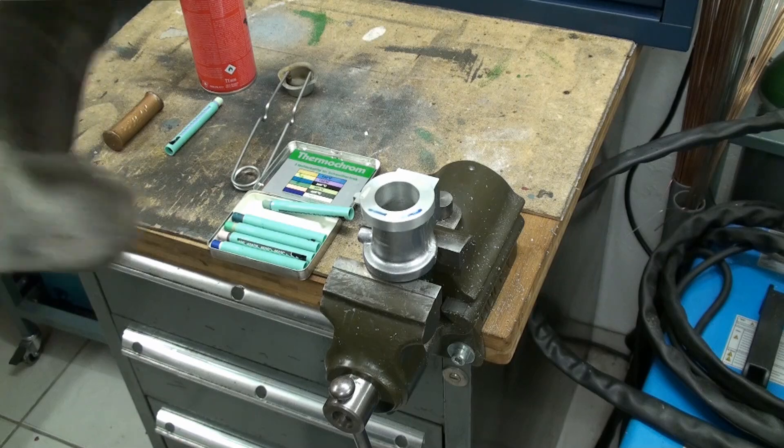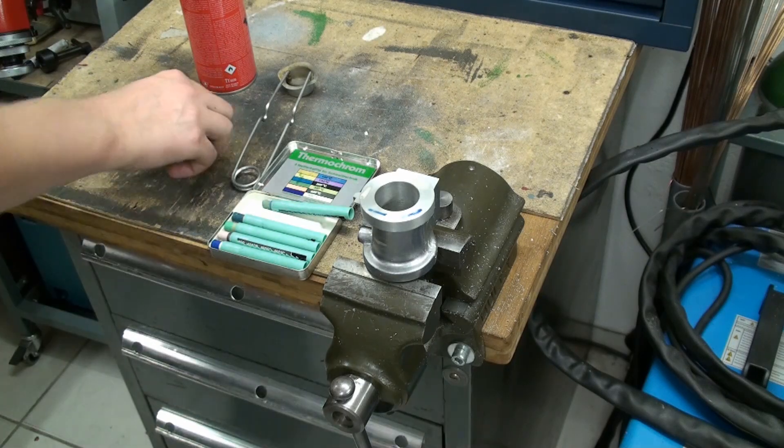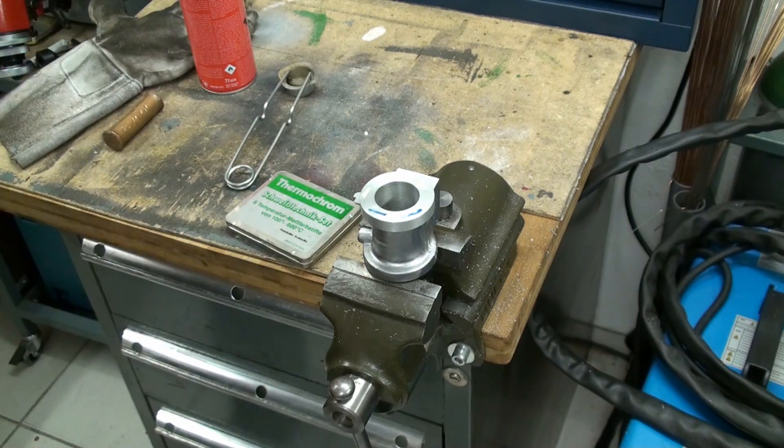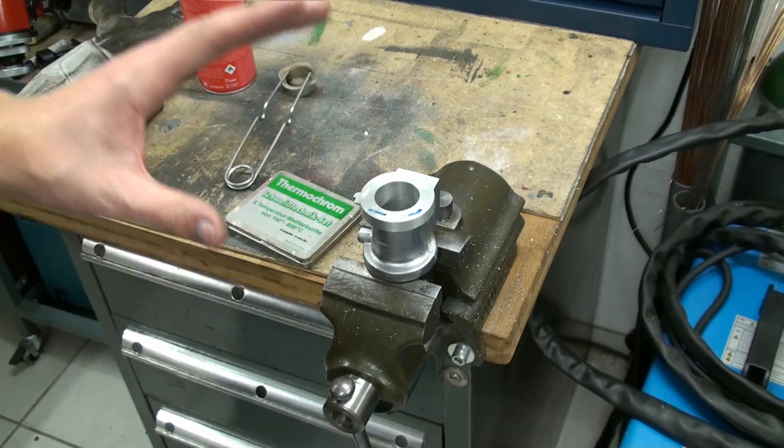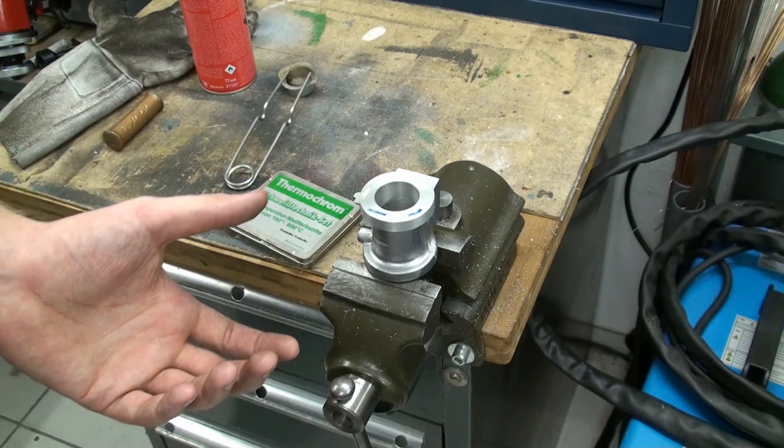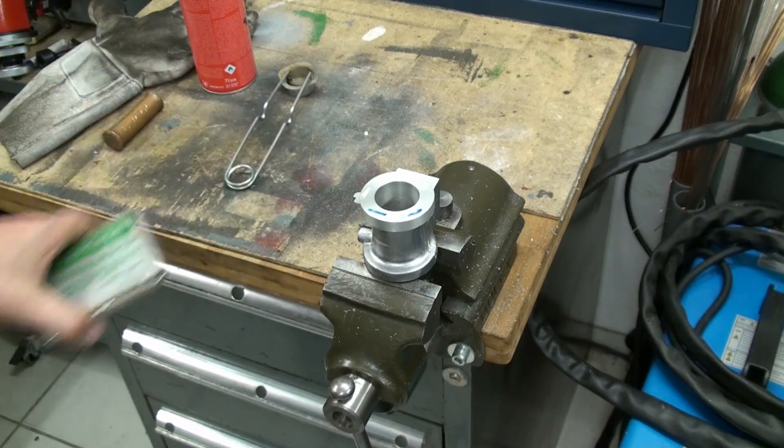So the temperature crayons, of course, gave us a good idea where we are at with the temperature. I don't trust the IR thermometers. When you are measuring against a metallic reflective surface, they are pretty unreliable.